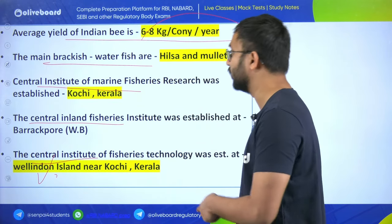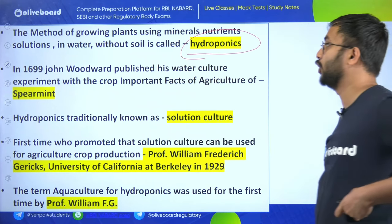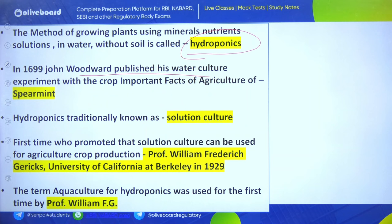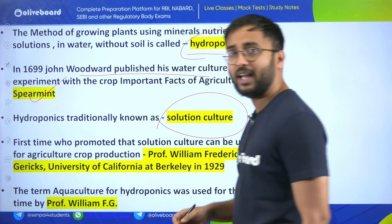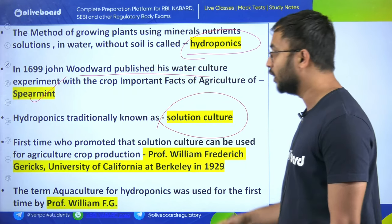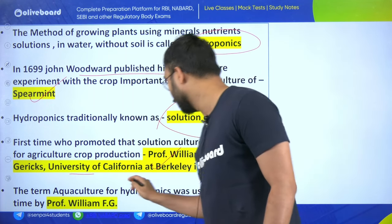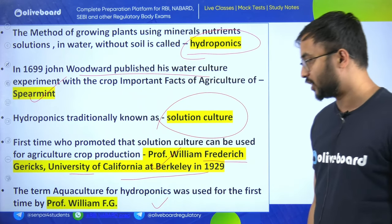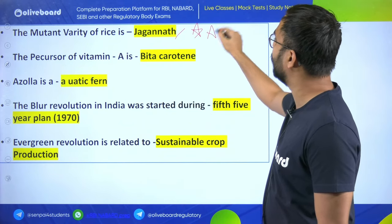Willingdon Island is an island that floats on water. Hydroponics is a method of growing plants using mineral nutrient solutions. Woodward published water culture experiments. Hydroponics is traditionally known as solution culture because plants grow in nutrient solution. Professor William Frederick Gericke of University of California, Berkeley, first promoted solution culture for agriculture. The term aquaculture for hydroponics was used first by Professor William F.G. Gericke.